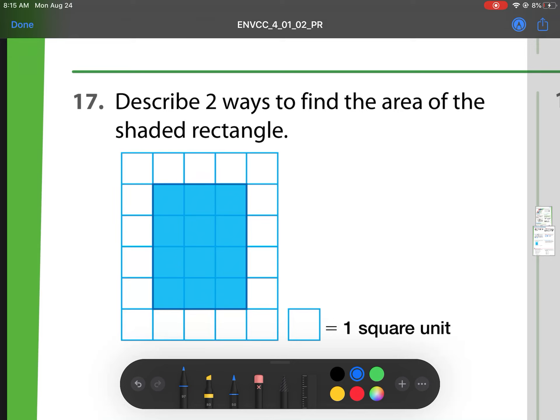So, heading to these last ones, describe two ways to find the area of the shaded rectangle. Well, one way is we can count the squares.